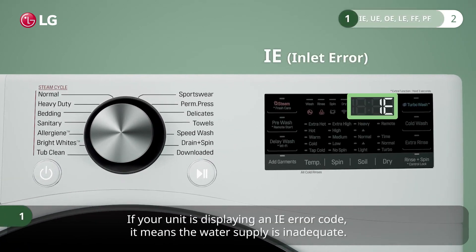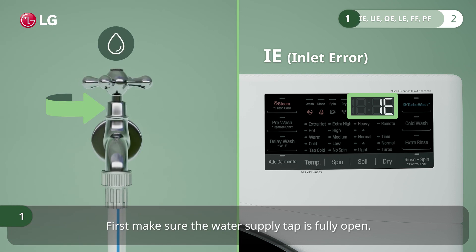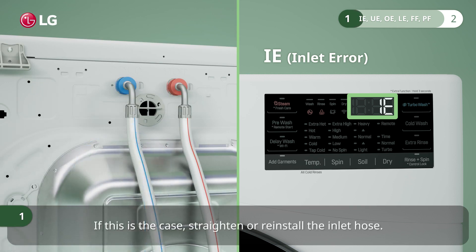If your unit is displaying an IE error code, it means the water supply is inadequate. First, make sure the water supply tap is fully open. Next, check whether the water supply hose is kinked. If this is the case, straighten or reinstall the inlet hose.